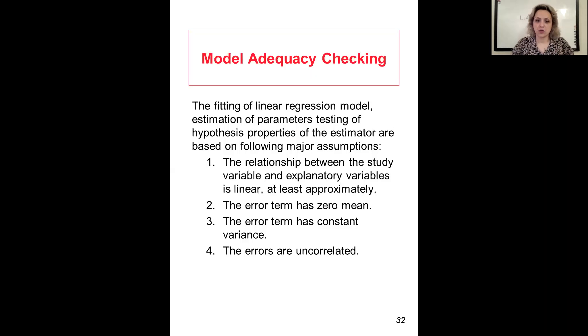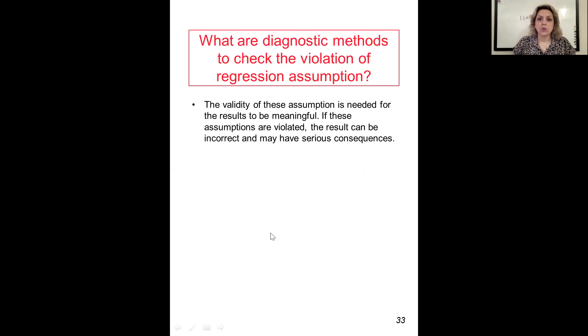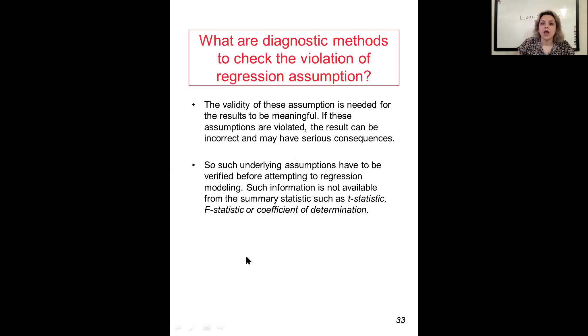The errors are uncorrelated and normally distributed. What are the diagnostic methods to check the violation of regression assumptions? We need to verify these assumptions for the results to be meaningful. If the assumptions are violated, the results can be incorrect or may have serious consequences.